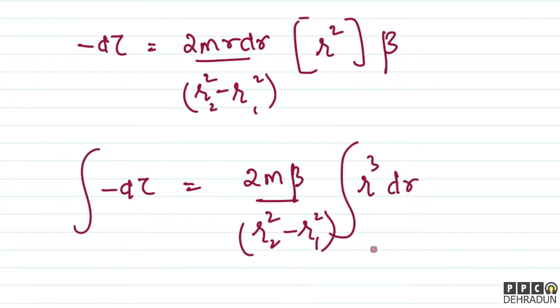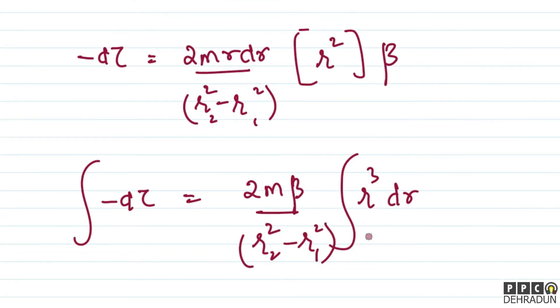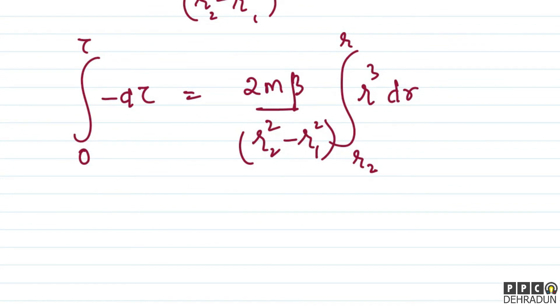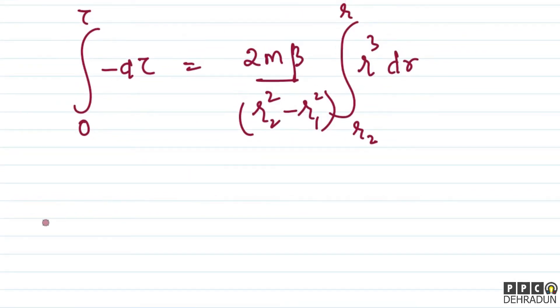Now if we integrate this, we can write: when r becomes r2, we understand that there is no elemental ring beyond that on which force or torque would act. So, we can say that at r2 the torque value is zero, and we've been asked for the torque value at some r. So let's see, at any radial distance r the torque value is tau.